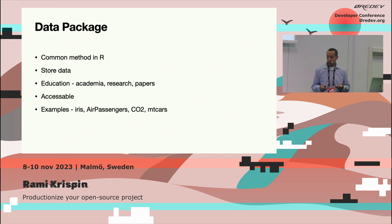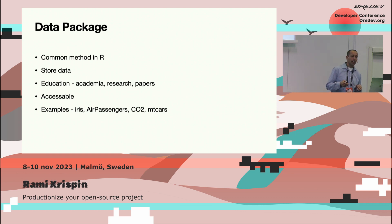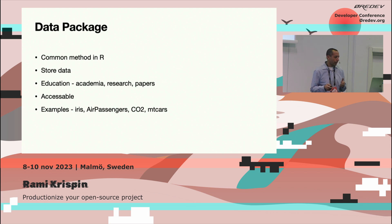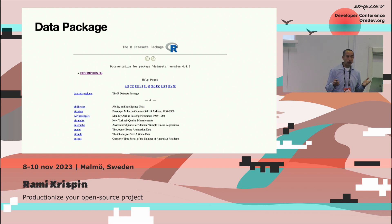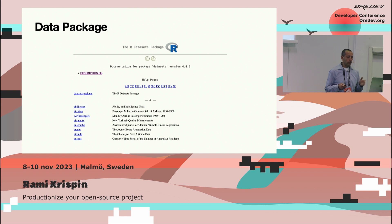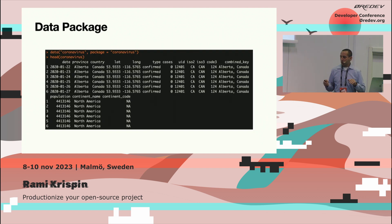The second use case, which is typically why I create data packages, is when you're building an open source project — you want to provide data for examples so people can try the functions you're building and use them in your documentation. There are many datasets available as R packages. I'm not sure how much this exists in Python or other languages, so I think it's really a niche. Famous examples in R include the iris dataset, air passengers, CO2 emissions, cars, and there's a datasets package that comes with R containing about 100 different datasets.